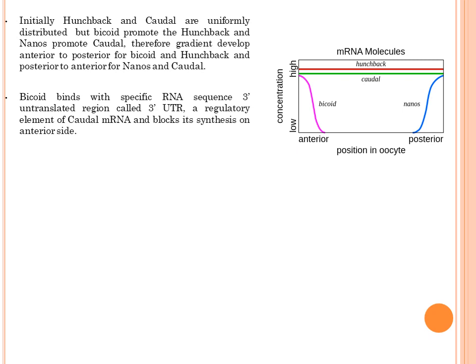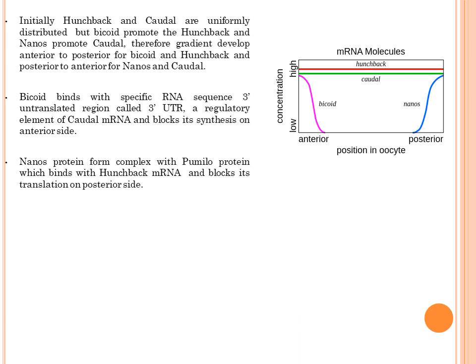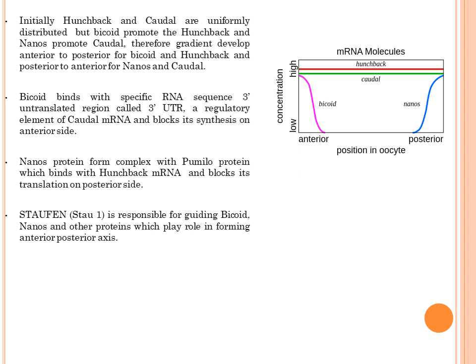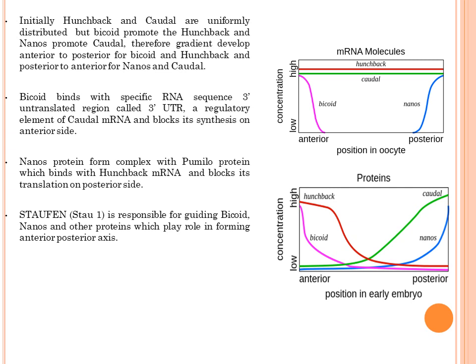Bicoid binds with specific RNA sequence which is called 3' UTR, और ये regulatory element होता है caudal messenger RNA का। Bicoid, caudal messenger RNA के regulatory sequence से bind करके उसकी synthesis को block कर देता है anterior side पे, जिसकी वजह से caudal anterior side पे localized नहीं हो पाता। ठीक इसी तरीके से nanos, pumilio protein के साथ complex बनाके hunchback messenger RNA को block कर देता है posterior side पे। इस तरीके से anterior to posterior एक gradient develop होता है bicoid और hunchback का, वहीं posterior to anterior एक gradient develop होता है nanos और caudal का।